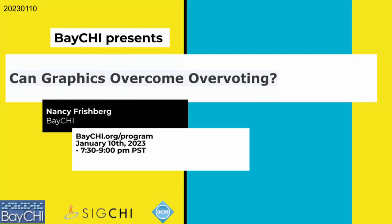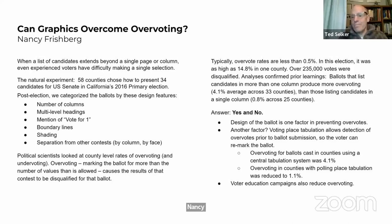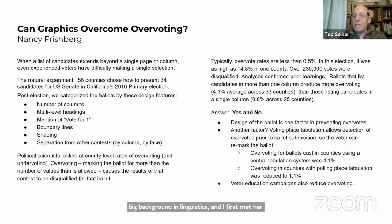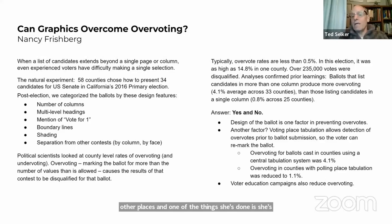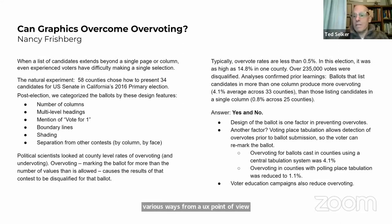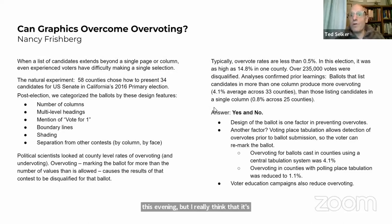The main event is introducing Nancy Fishberg, a lifelong UX person with a big background in linguistics. She and the host worked together at IBM Research. She's gotten involved with an organization that looks into voting from a UX point of view. Tonight she'll talk about overcoming overvoting.